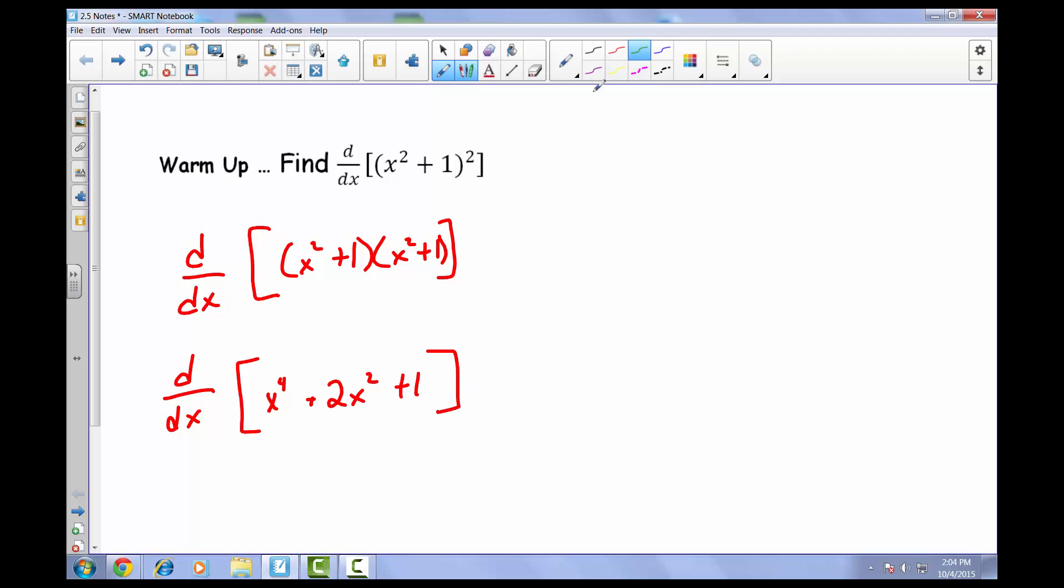So pretty much all we've done there is just expanded that binomial being squared. Now we can take the derivative with respect to x. So we end up with 4x cubed plus 4x, and the derivative of this would just be 0. So here would be our derivative.